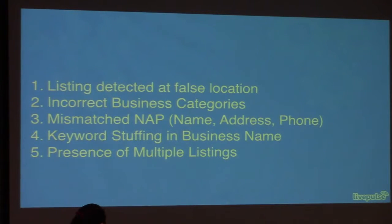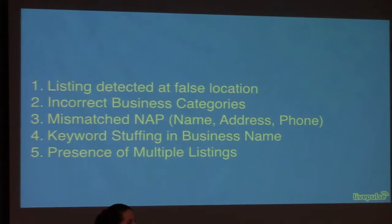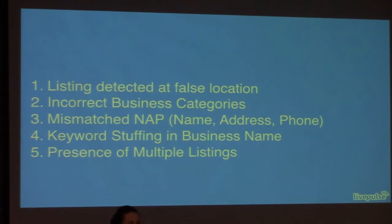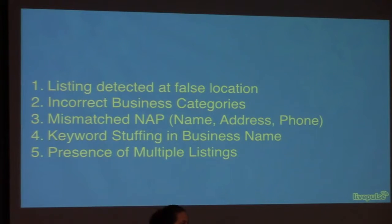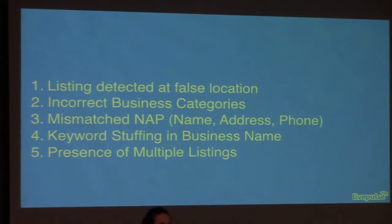There are some negative ranking factors when it comes to listings. First: listings that are detected at a false location. When you put in your address, if it's not identical to your website as well as every other listing out there, Google or Yelp is going to come back and say they've detected that's not a real location — and that's not okay. Second: incorrect business categories. If you're a tire repair shop, you're not an auto repair center unless you do both. Make sure your categories are exactly where they need to be and accurate, because if they're mismatched throughout the listings, it will hurt your actual Google search results.